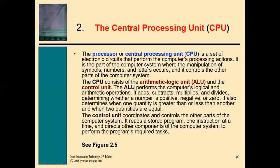The processor, or central processing unit, is a set of electronic circuits that performs the computer's processing actions. It is the part of the computer system where the manipulation of symbols, numbers, and letters occurs. It also controls other parts of the computer system. The CPU consists of an arithmetic logic unit and a control unit. The ALU performs logical and arithmetic processes such as adding, subtracting, dividing, and determining whether a number is positive, negative, or zero.